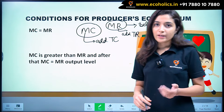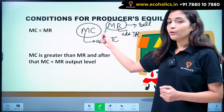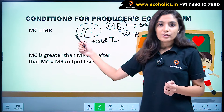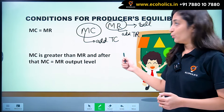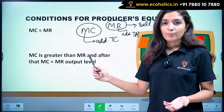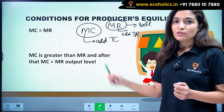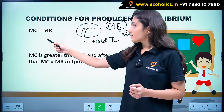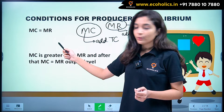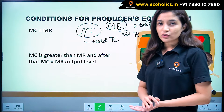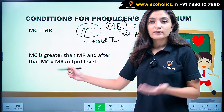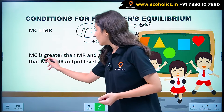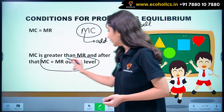These are our basic concepts of marginal revenue and marginal cost. Now, coming on to the marginal revenue and marginal cost approach. According to this approach, we have two conditions for producer's equilibrium. First, marginal cost is equal to marginal revenue, and our second condition is that marginal cost is greater than MR after the MC equals MR output level.